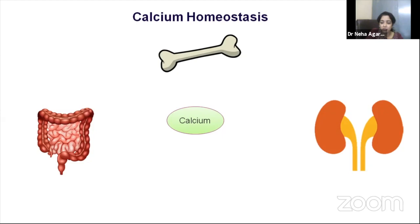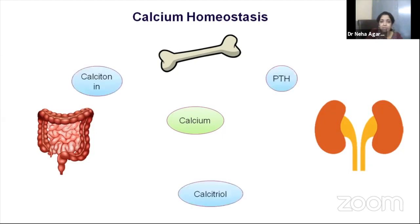Three main hormones maintain calcium homeostasis. Parathyroid hormone (PTH), produced by the parathyroid gland, acts on bone to bring calcium into the blood, increases renal resorption of calcium, and promotes phosphorus excretion — making it a hypercalcemic and hypophosphatemic hormone. Calcitriol, the activated form of vitamin D, enhances calcium resorption from the gut and kidneys, making it a hypercalcemic and hyperphosphatemic hormone.